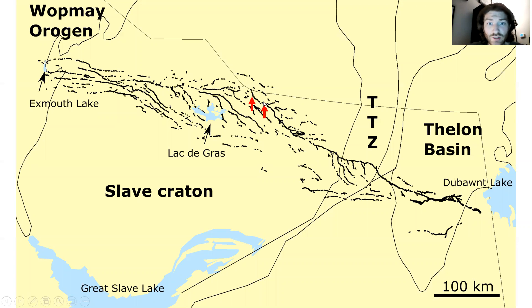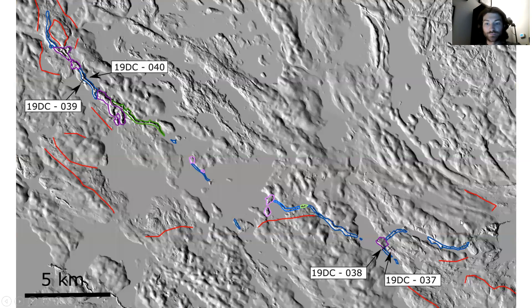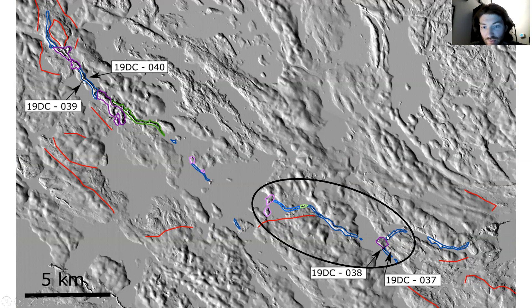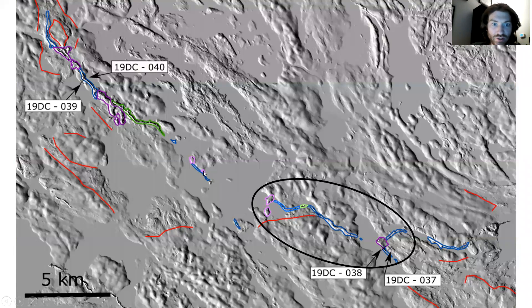The next section we're going to look at is right here in the middle of the Slave Craton, where a tributary esker joins, and we're going to follow it down flow. Right here we have the tributary esker — two eskers joining. They result in this broad, unconstrained sediment body, which converts back into a ridge, becomes multi-crested, then flat-crested, and terminates in these flat-topped terminal bodies.